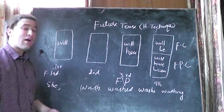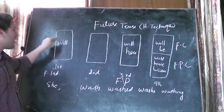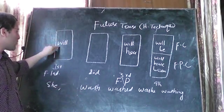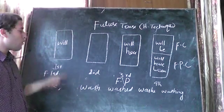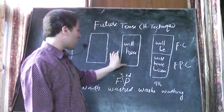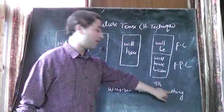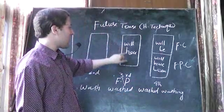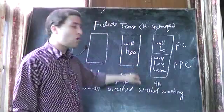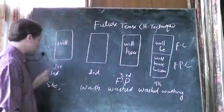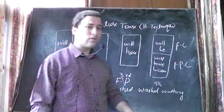We have four kinds of sentences. Positive: she will wash. Negative: she will not wash. Interrogative: will she wash. Interrogative negative: will she not wash. Now reach to the third box — we use the third form of verb, which is 'washed'. So: she will have washed. Negative: she will have not washed. Interrogative: will she have washed. Interrogative negative: will she have not washed.